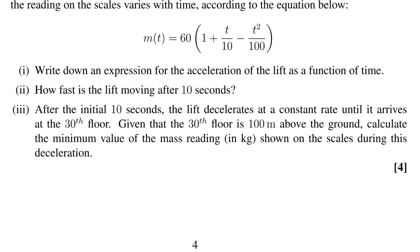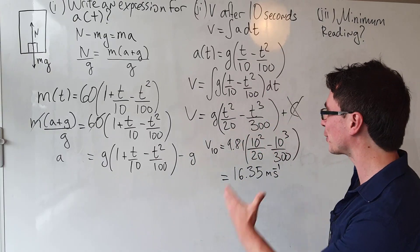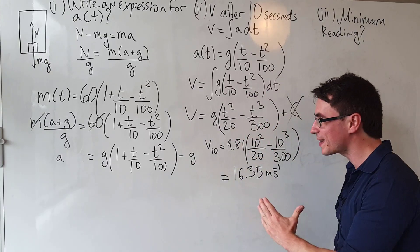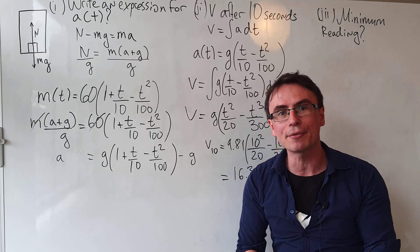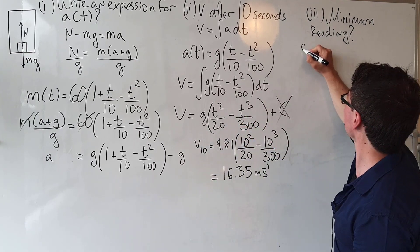Now for the final part of the question: after the initial 10 seconds, the lift decelerates at a constant rate until it arrives at the 30th floor. Given that the 30th floor is 100 meters above the ground, calculate the minimum value of the mass reading. The first thing we need to do is work out how much distance the lift has traveled in those 10 seconds.